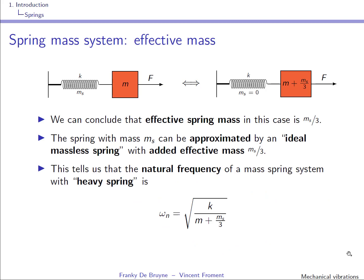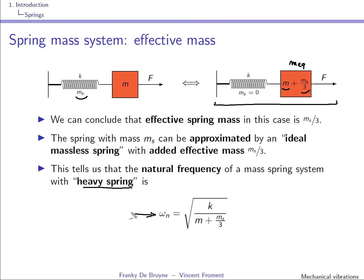We can replace the system with a massless spring of the same stiffness, but considering an equivalent mass which is the original mass plus one third of the mass of the spring. We can then compute the natural frequency of this mass-spring system with a heavy spring: it's the square root of the stiffness over the total equivalent mass defined as m plus mₛ/3.